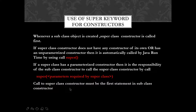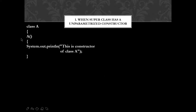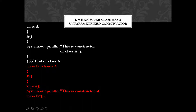Let us see the first way of calling the unparameterized constructor with an example. I'll take one class A with an unparameterized constructor — no parameters — containing one output statement displaying 'this is constructor of class A'. Then I take class B which extends class A, with its own constructor containing an output statement saying 'this is the constructor of class B'.